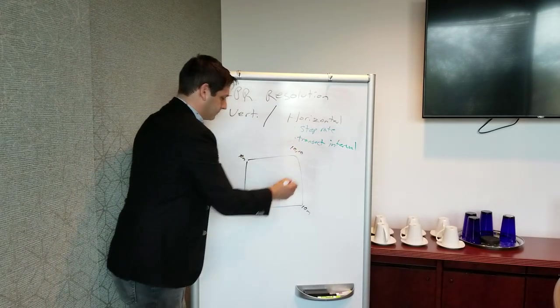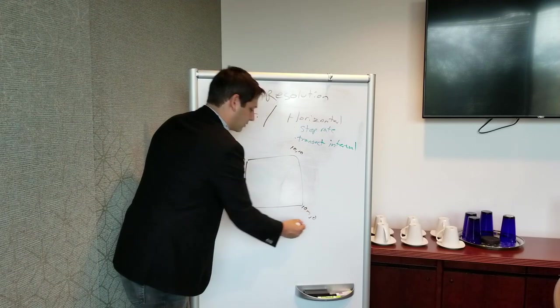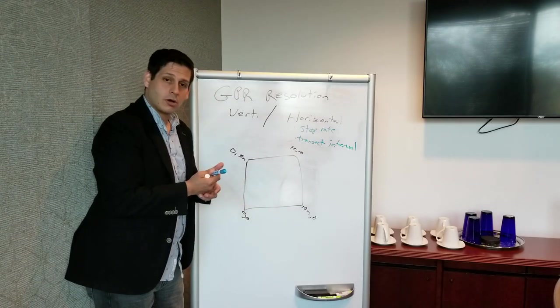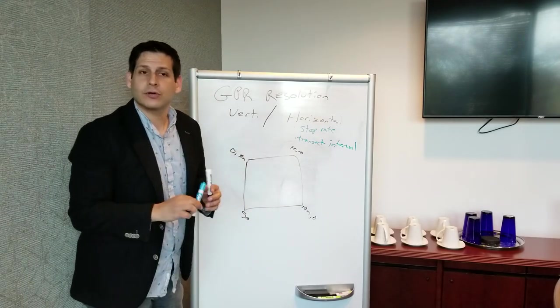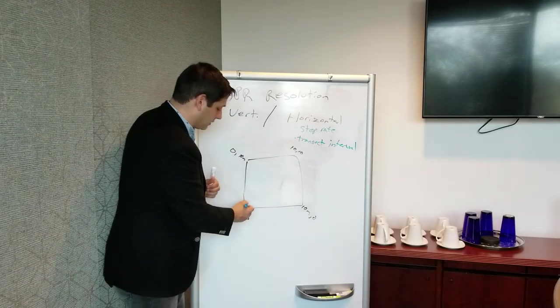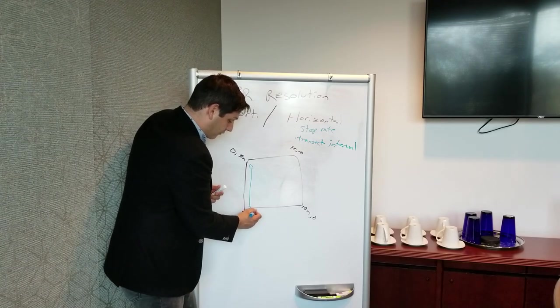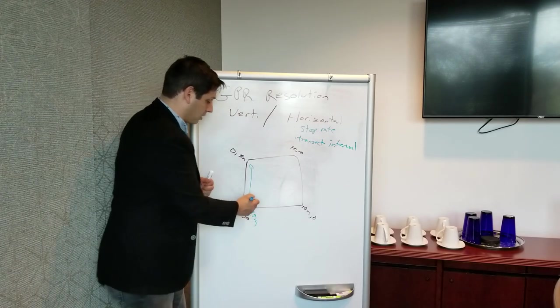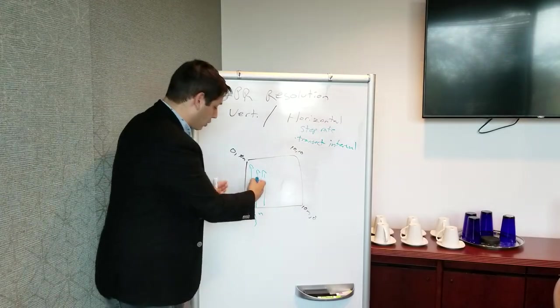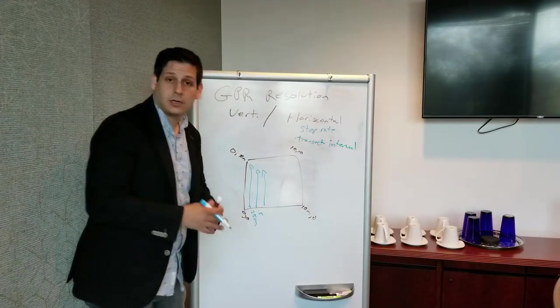How close together are your transects going to be? Whether it's a formal grid or not. It doesn't matter. But how close together will your transects be? Are you going to go every half meter? Are we going to go every 0.25 meters? You're going to go every half meter, every meter, and so forth. So the closer you go, the higher the resolution. The further away you go from each of your transects, the lower the resolution.